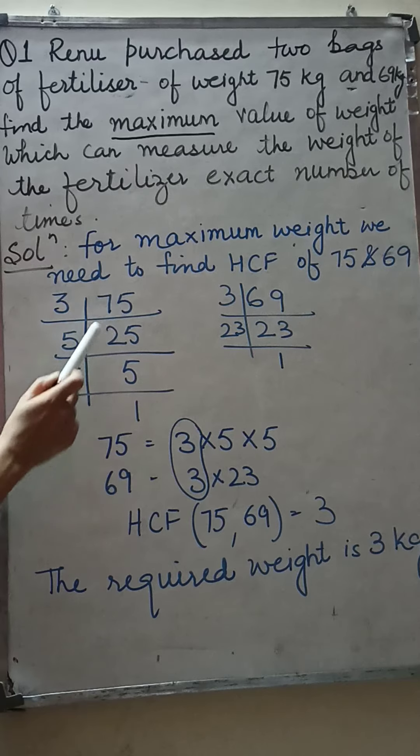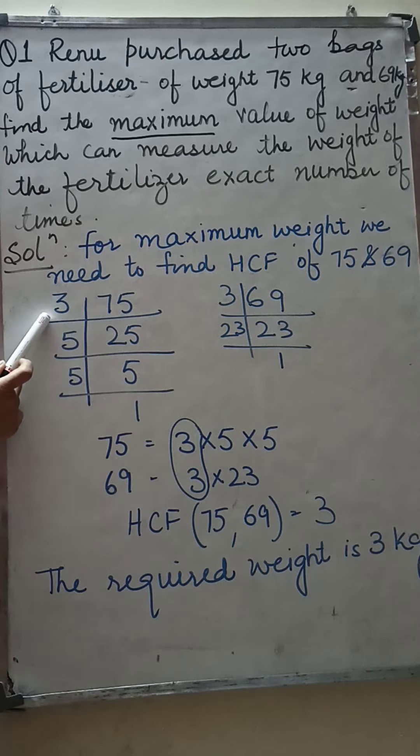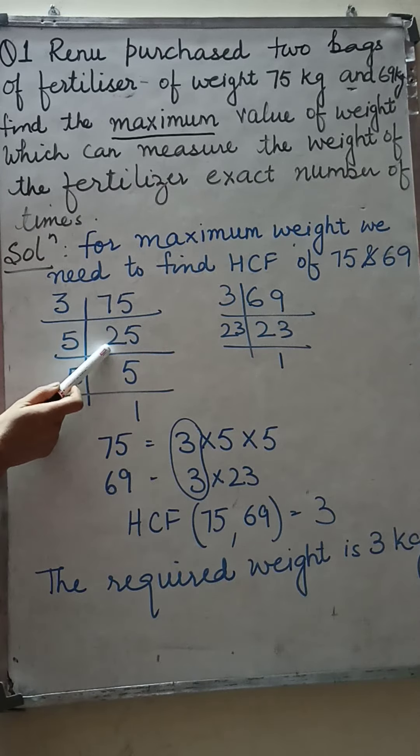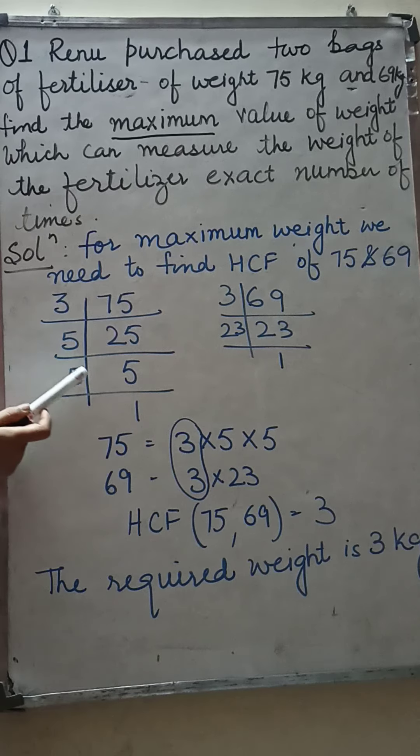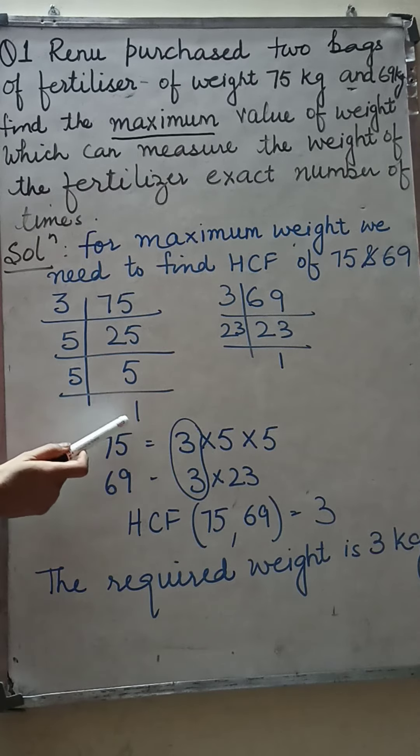Here prime factors of 75: 75 divided by 3, 25. 25 divided by 5, 5. 5 divided by 5 we get 1.